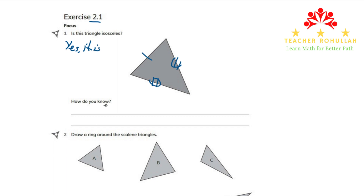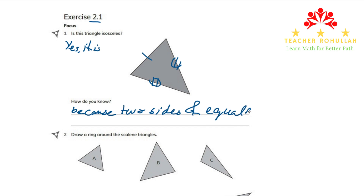And now here it says, how do you know? By looking at the sides, because two sides are of equal sizes. And at the same time, two angles which are opposite to those sides are also equal.